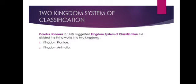The first is the two kingdom system of classification. This was the first kingdom system of classification, proposed by Carolus Linnaeus in 1758. He divided the living world into two kingdoms: Kingdom Plantae and Kingdom Animalia. However, this two kingdom system was discarded due to some shortcomings.